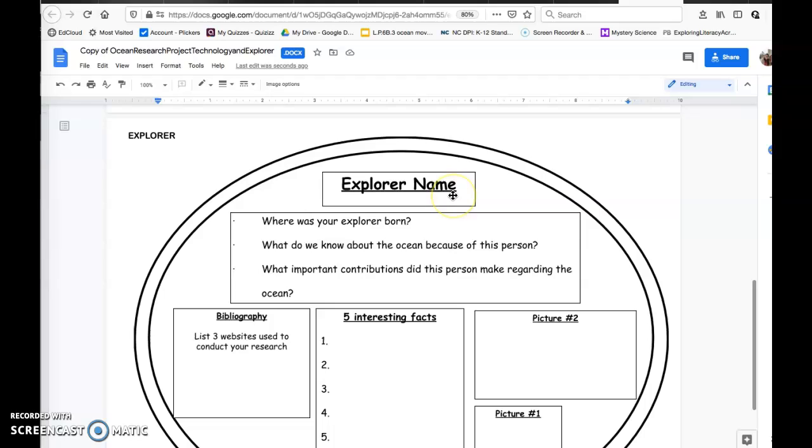Next, we're going to do explorer. So this is day two. Where was your explorer born? I want to know the explorer's name. I want to know what do we know about the ocean because of this explorer. I want to know what important contribution this person made regarding the ocean. These can be in paragraph form if you'd like. You can also just answer the questions in complete sentences. Again, you need to cite your sources. Five interesting facts about the person can be bullet points if you like, a picture of the person if you can find it, and another picture of the person if you can find it. If you can't find it, maybe put a picture of what they're famous for discovering or what we know about the ocean because of them.